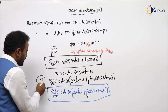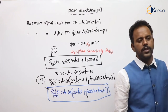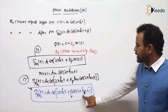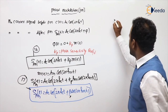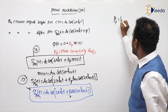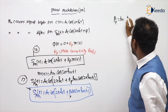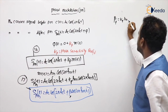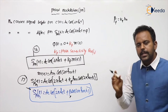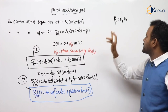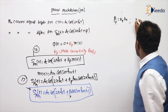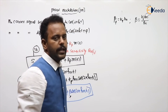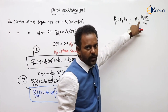So all 17 expressions are completed. This is the single tone PM expression. What is β_p? It is the modulation index, and its value is kp·A_m. Now compare: the beta value in FM is kf·A_m / f_m, but here for PM it is kp·A_m only — feel the difference. That is for phase modulation; this is for frequency modulation.